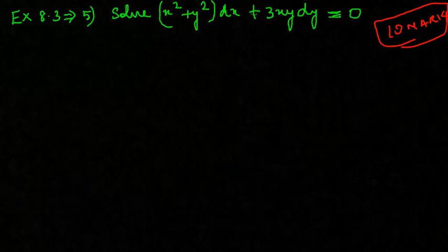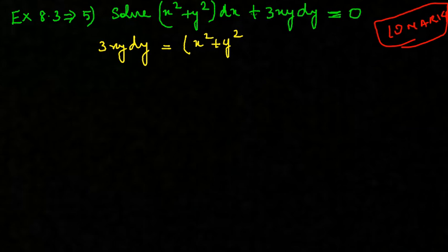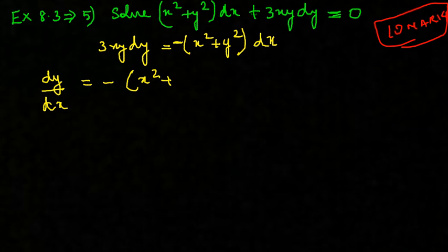To solve the equation, let's first bring it to the dy/dx form. I'm going to retain dy on the left-hand side and take x squared plus y squared to the right-hand side. Here it is plus x squared plus y squared dx, so when it goes to the other side it becomes a minus.